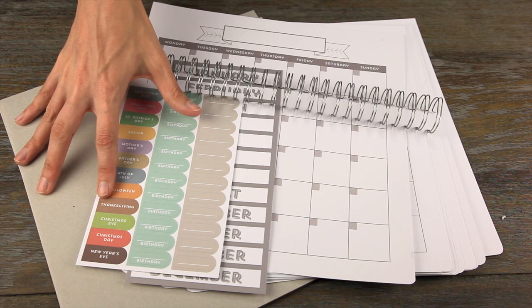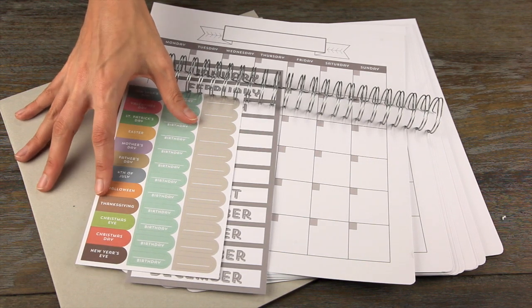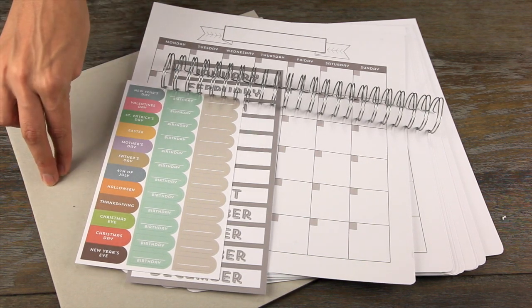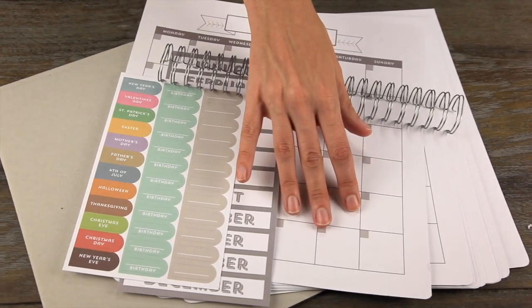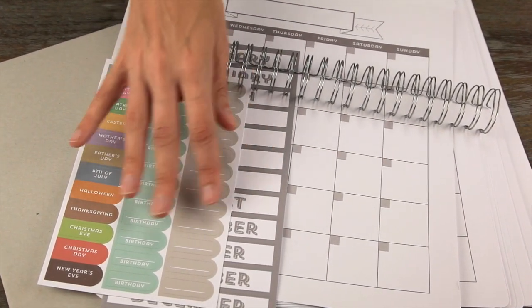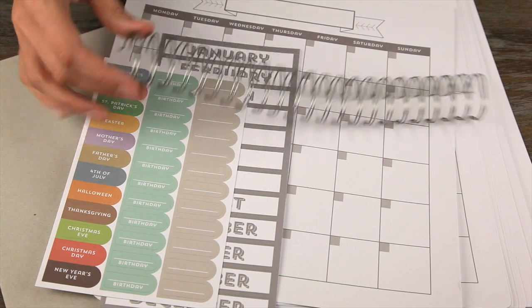There is the 12 by 12 calendar kit. You get a chipboard cover, 12 month calendar sheets, month sticker sheets, event sticker sheets, and wire.